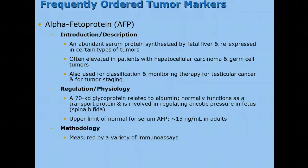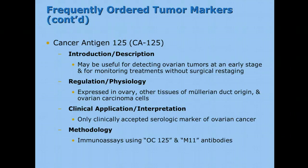Now we'll go through a list of tumor markers and the really important details of each. First, alpha-fetoprotein (AFP) is an abundant serum protein synthesized by the fetal liver and re-expressed in certain types of tumors. It's often elevated in patients with hepatocellular carcinoma and germ cell tumors, and we can also find it elevated in testicular cancer. So the big things AFP is used for are liver cancer and testicular cancer, measured by immunoassay. Next is Cancer Antigen 125, or CA-125, which is very useful for ovarian tumors, finding them at a very early stage, also measured by immunoassay.